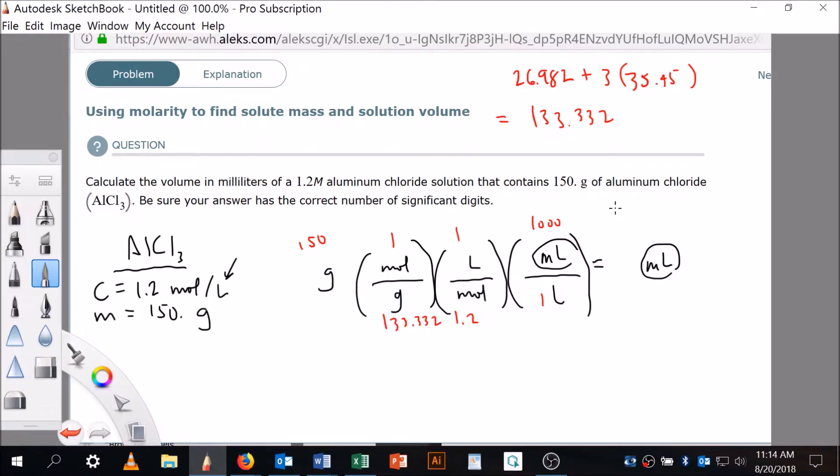150 times 1,000 divided by 1.2, and I got 937.5098.